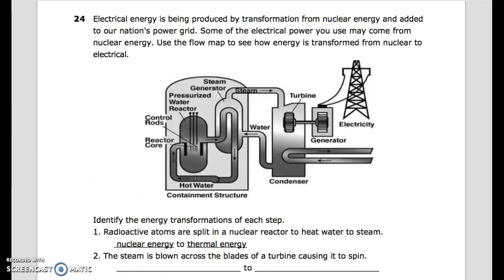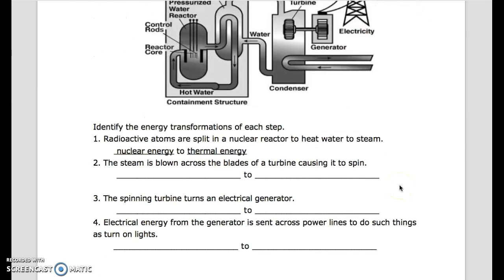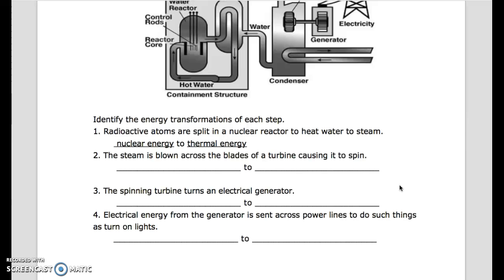Question 24: Electrical energy is being produced by transformation from nuclear energy and added to our nation's power grid. Some of the electrical power you use may come from nuclear energy. Use the flow map to see how energy is transformed from nuclear to electrical. Control rods, reactor core, hot water, containment structure, condenser, water, pressurized reactor, steam generator, steam, turbine, generator, electricity. Identify the energy transformations of each step.